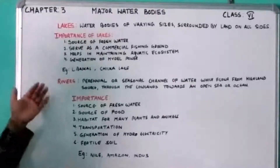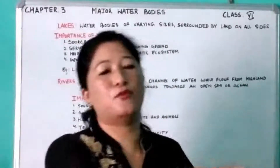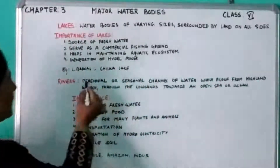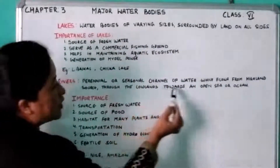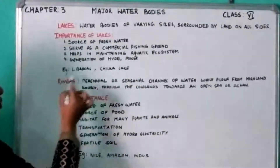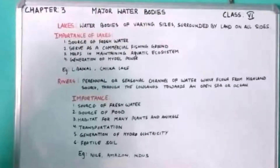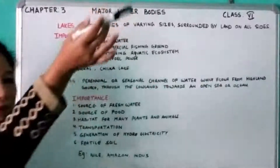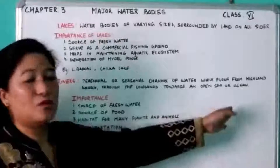The next water body is the river. A river is a channel of water that originates in the mountains, flows down the slope, and finally joins the sea, ocean, or a lake. Rivers are perennial or seasonal channels of water that flow from a highland source — a mountain — through lowland towards an open sea or ocean. Perennial rivers flow throughout the year, fed by melting ice or glaciers, while seasonal rivers flow only during certain times. Some rivers form inland drainage.